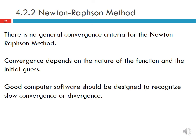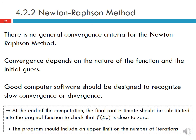Good computer software should be designed to recognize slow convergence or divergence. One safeguard is to substitute the final root estimate back into the original function to verify that f of xr is actually close to zero — this guards against cases where iterations get close together but the function value is not near zero. The program should also include an upper limit on the number of iterations to prevent infinite loops, and should output a note if the maximum iteration count is reached, indicating the estimate may not be an actual root.